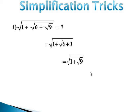Again, we find the square root of 9, which is 3. Then we take the sum: 1 plus 3 gives us square root of 4. And the square root of 4 is 2.